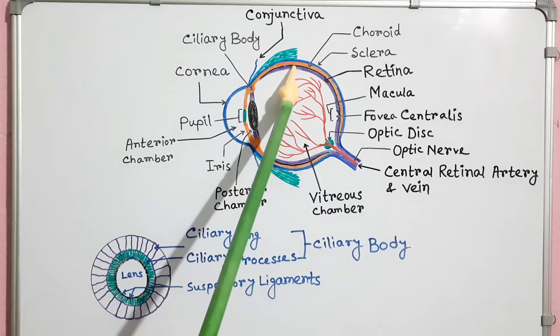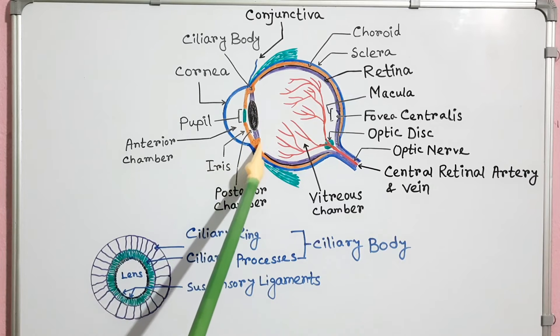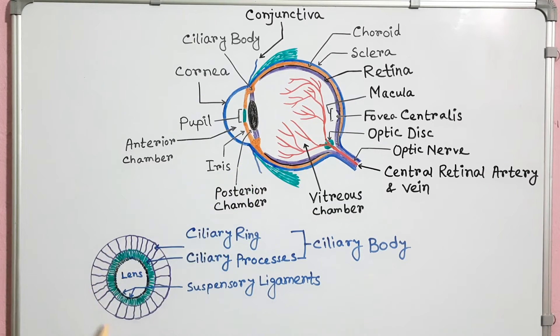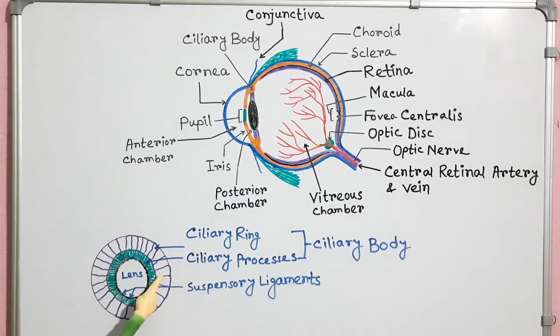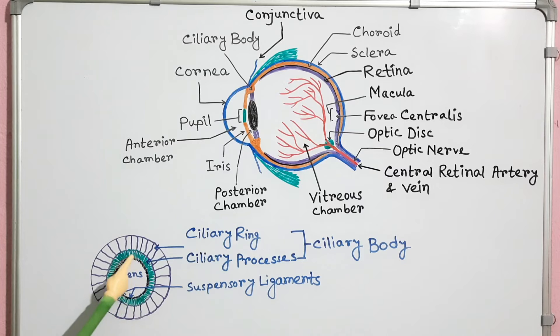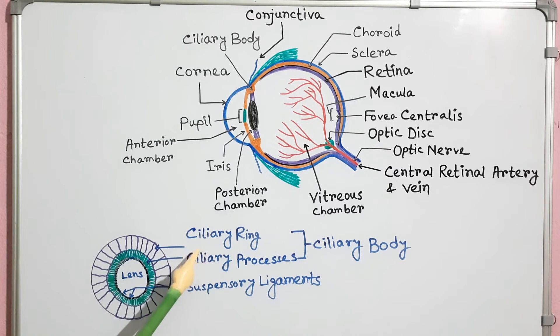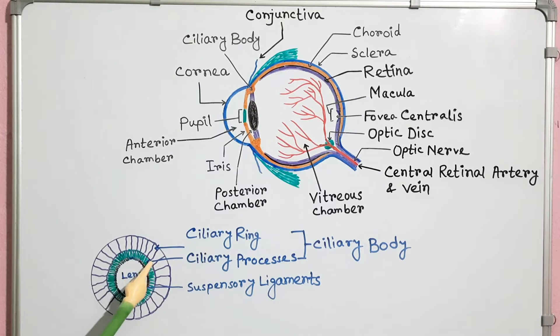The choroid is continuous anteriorly with the ciliary body. It is a ring-like thickening. In this diagram, I have tried to show the lens and ciliary body. The ciliary body consists of an outer ciliary ring and an inner group of ciliary processes.